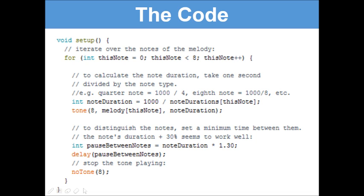And then to calculate the note duration, take one second divided by the note type. E.g., quarter note equals 1000 divided by 4, an eighth of a note equals 1000 divided by 8. What we need to do now is transfer that into language the Arduino will understand by dividing it by 1000. So int noteDuration = 1000 / noteDurations[thisNote].